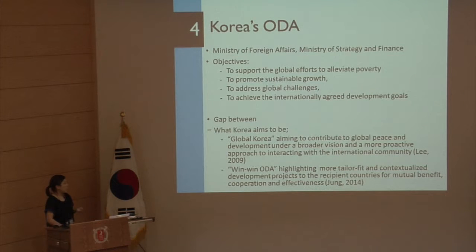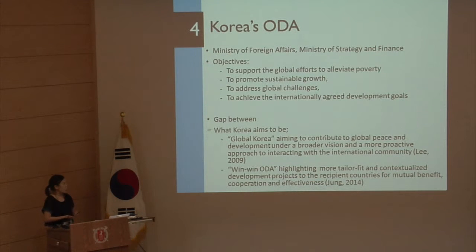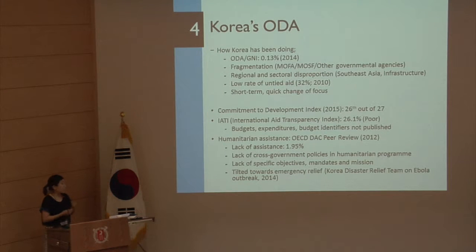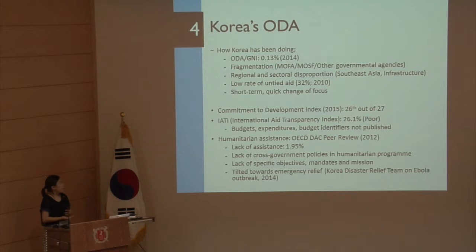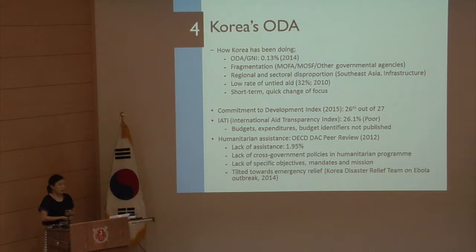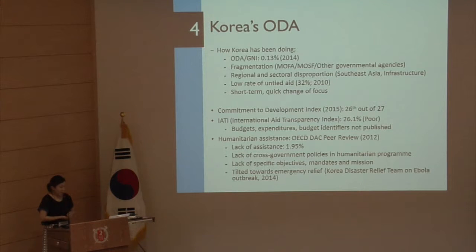In terms of what Korea aims to be, former President Lee Myung-bak and former Prime Minister Jung Hoon spoke of promoting a 'Global Korea' idea as well as more contextualized development projects called 'win-win ODA' towards developing countries. However, Korea still faces serious issues: ODA expenditure is near the bottom among OECD members, and the problem of fragmentation is quite serious. Other than the two main ministries, more than 44 institutions are involved in sporadically implementing ODA, leading to aid ineffectiveness.